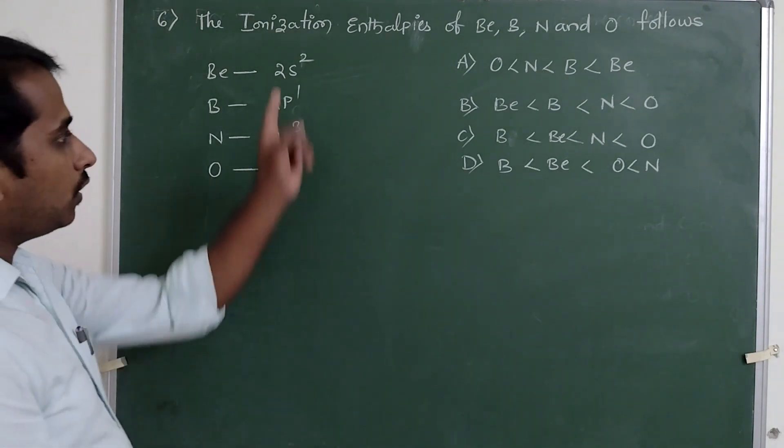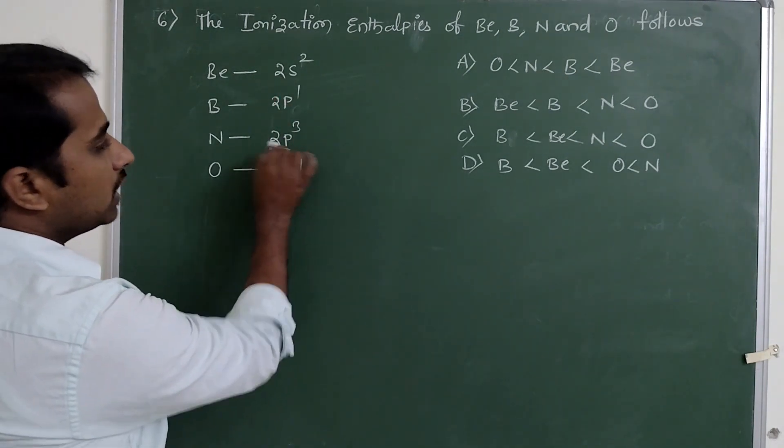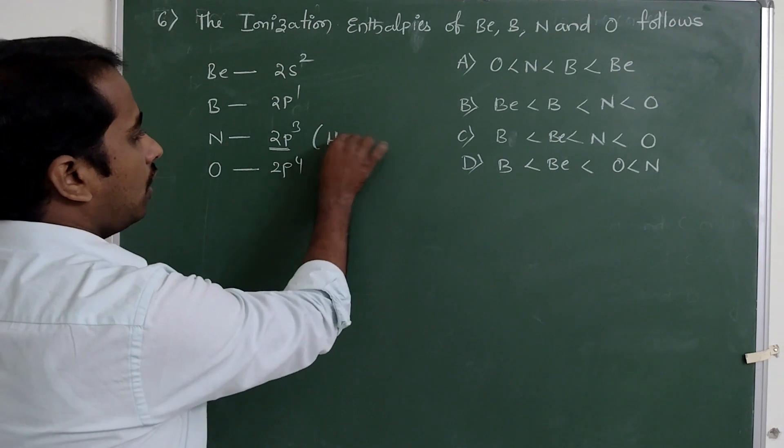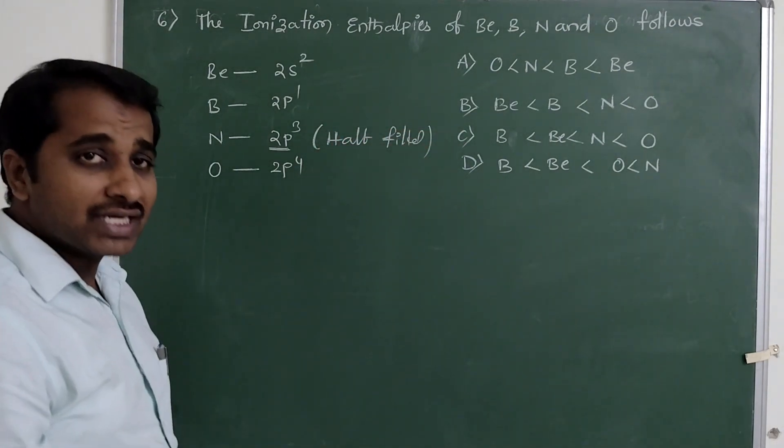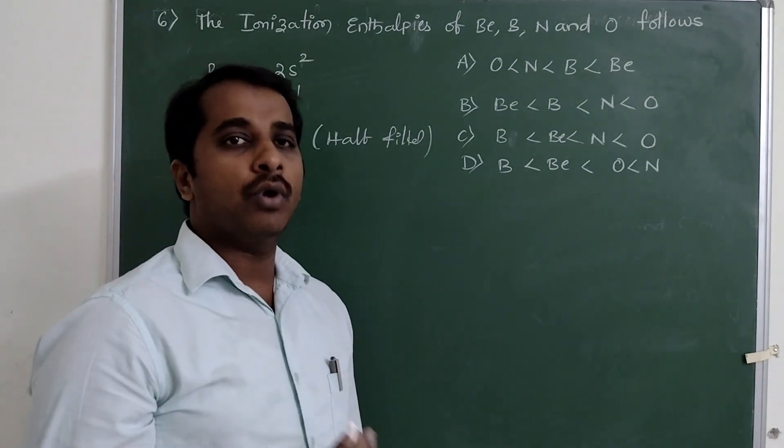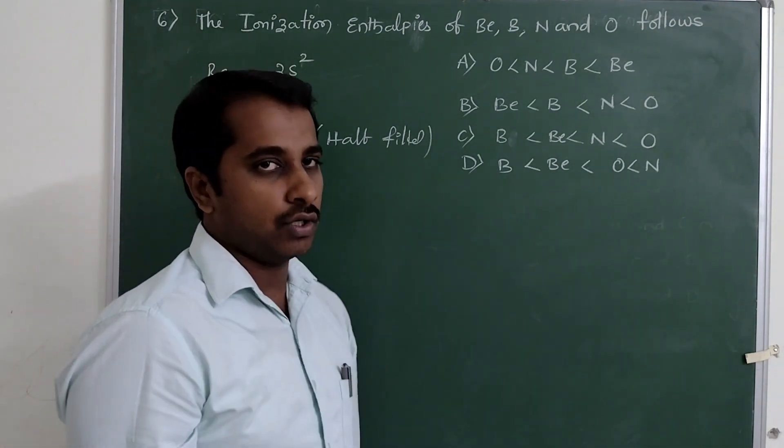So among all this is the half-filled configuration. Half-filled configuration is more stable, so it requires more energy to remove an electron from its outermost shell.